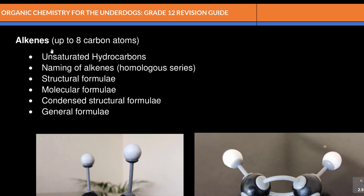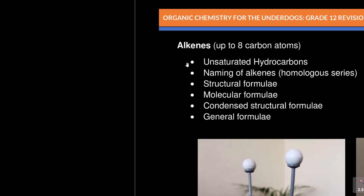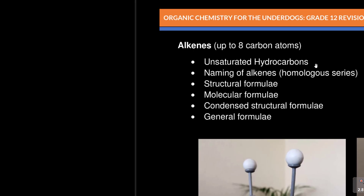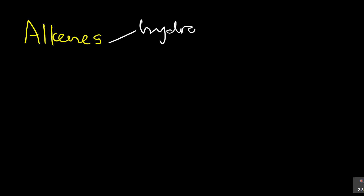We are looking at alkenes, and with alkenes, it covers up to 8 carbon atoms. We are also going to follow up from the part on unsaturated compounds — the naming, the structural formula, molecular formula, condensed structure, and the general formula. Now, let me bring in the background again. Number one, they are hydrocarbons, meaning they contain only hydrogen and carbon atoms.